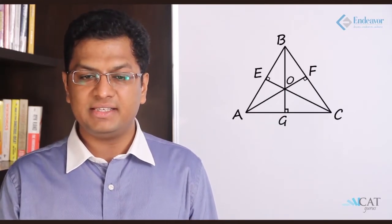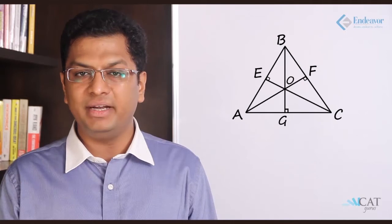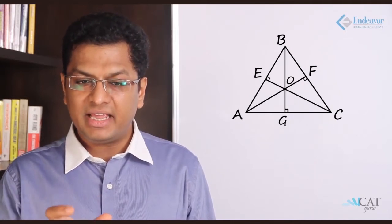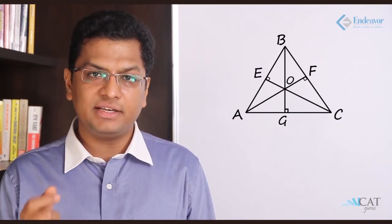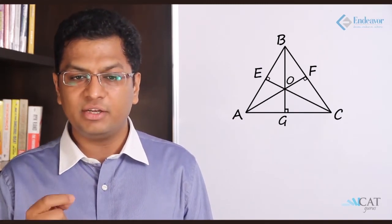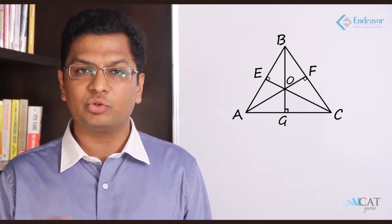There is something called an altitude and an orthocenter. The height, as we use when calculating the area of a triangle, is the perpendicular from one vertex to the opposite side. Such a perpendicular is also called the altitude. In triangle ABC, B gives an altitude BD on AC. Similarly, A gives an altitude AF on BC, and C gives an altitude CE on AB. These are the three altitudes. The point at which the three altitudes meet is called the orthocenter.